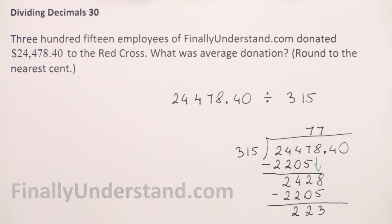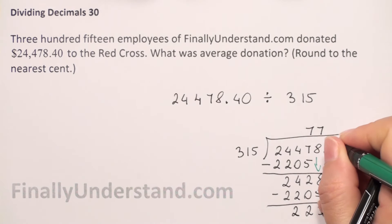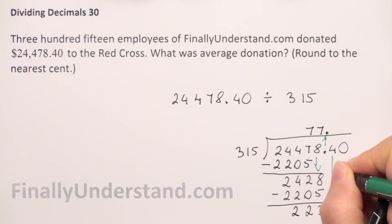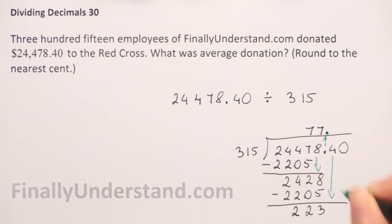What next? We bring down the next digit. We place the decimal point exactly in the same column, and we bring down the next digit.